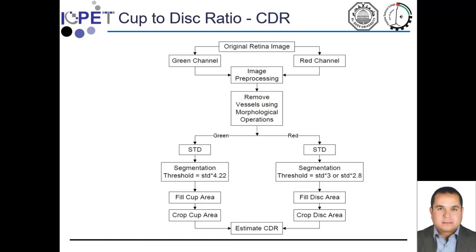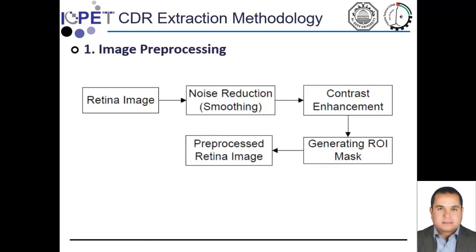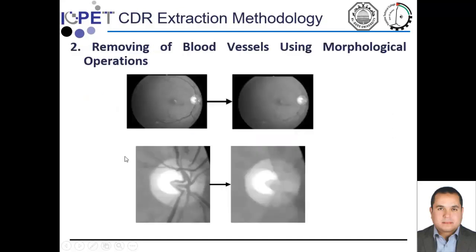Finally, we crop the region of interest area and calculate the cup-to-disc ratio. The pre-processing step includes noise reduction, smoothing, and contrast enhancement, then generating the region of interest mask. This is the blood vessel removal step — as we can see, there are no blood vessels remaining after applying morphological opening and closing operations.